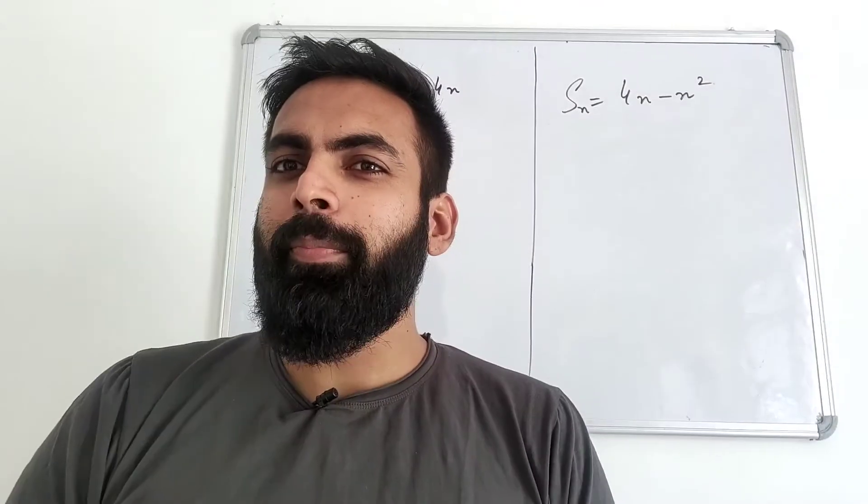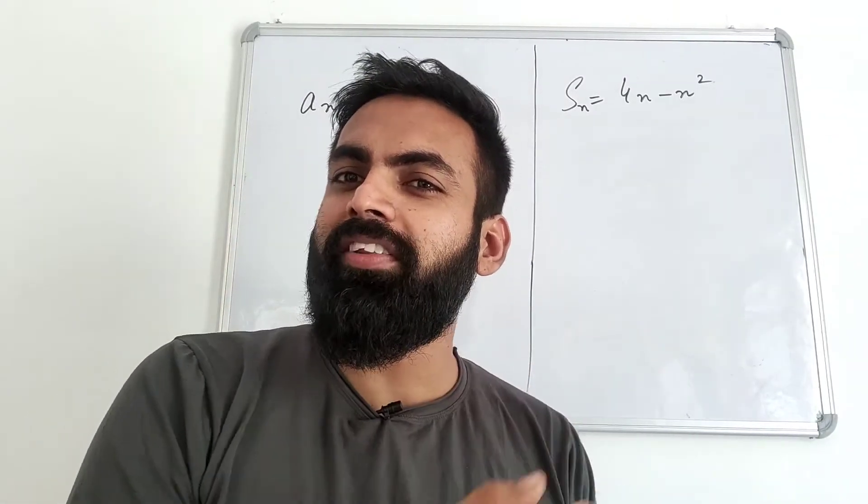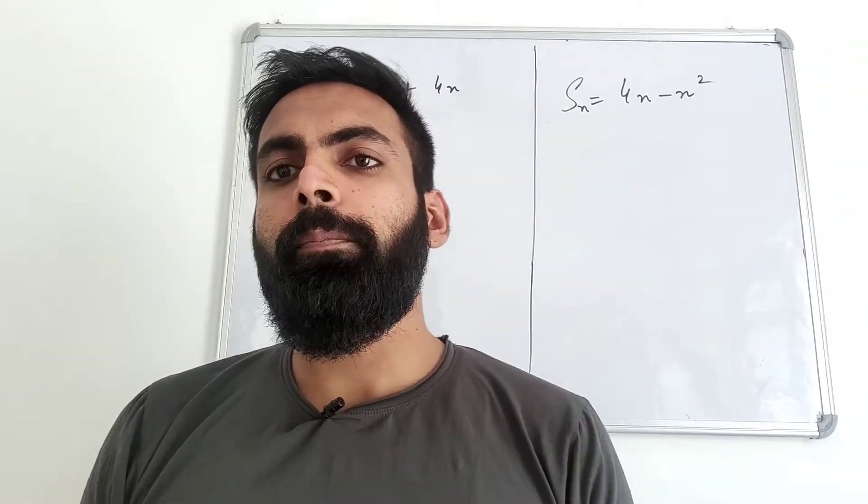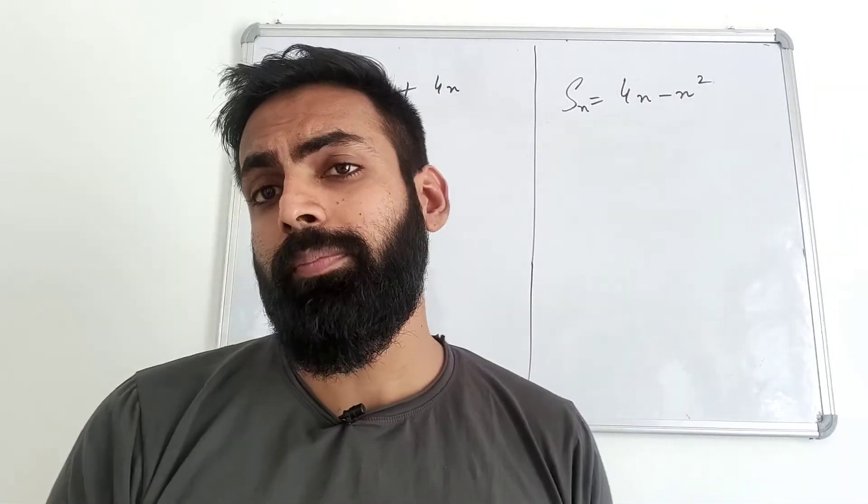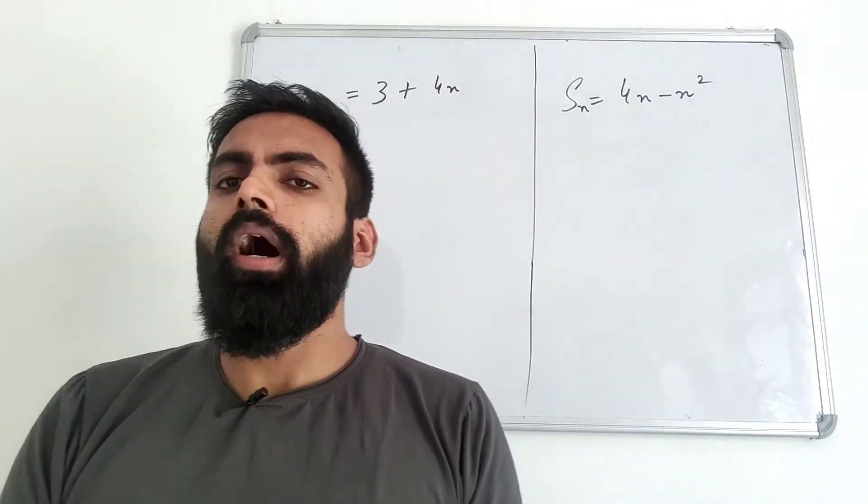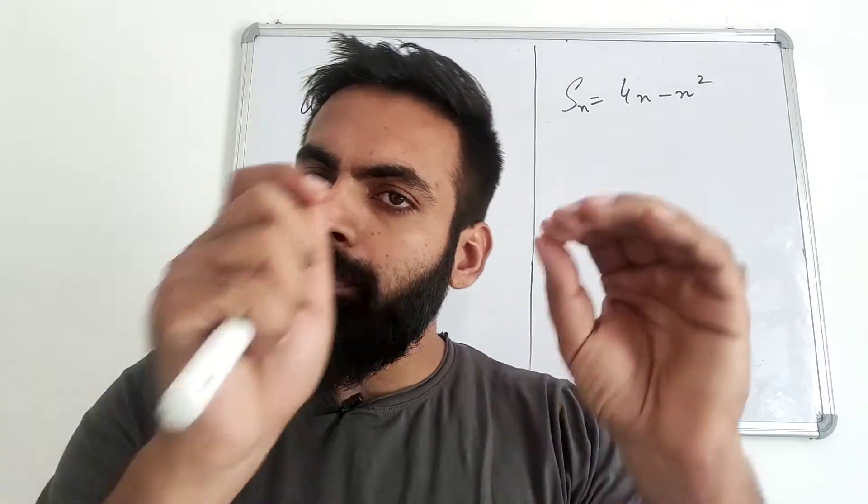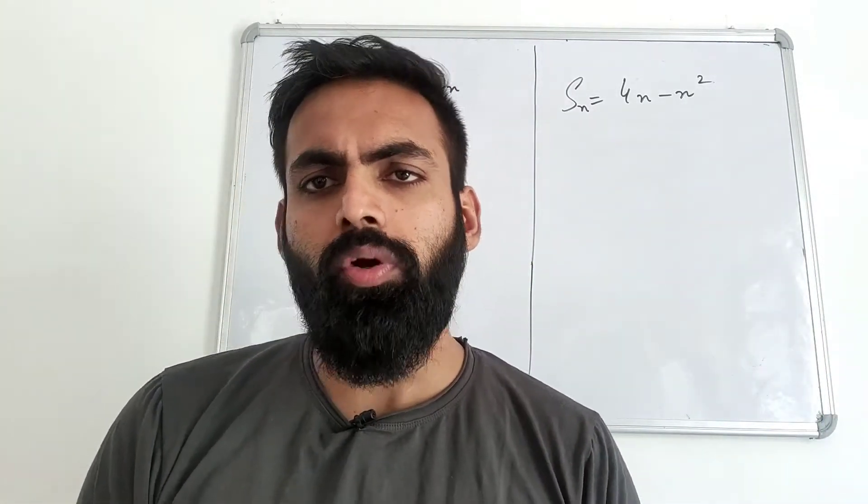Look, these are two categories. If you have AP, you have T1, T2, T3 terms. You can find sum, nth term, and so on. But if you have a general term given, that AP is 3 plus 4n, form the AP.